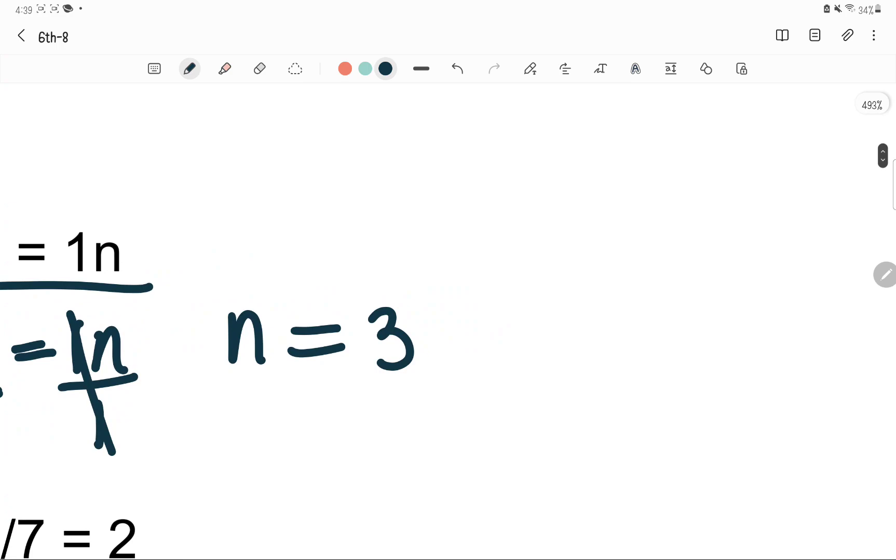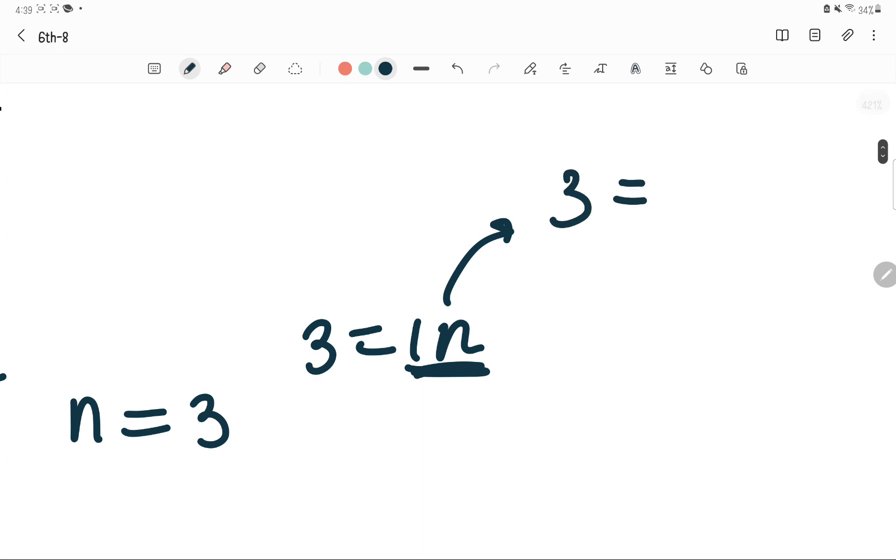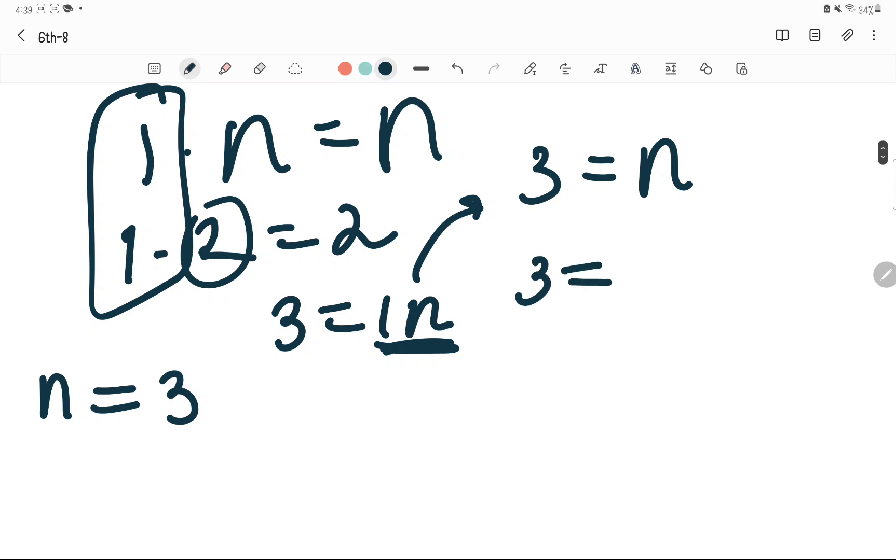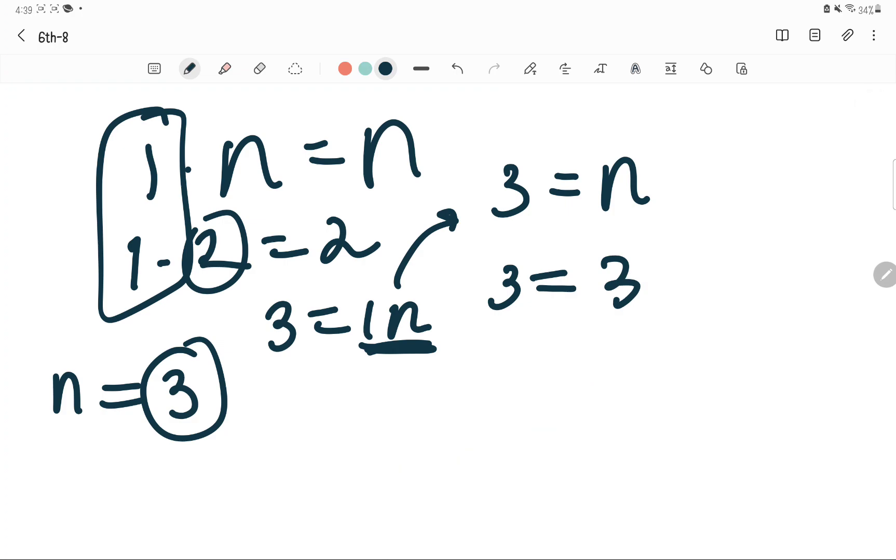We can check by 3 equals 1n. For this one, it can also be written as just 3 equals n, because 1 times n is just n. 1 times 2 is just 2. There's no meaning putting 1 times in front of any variables or numbers, because no matter what you divide or multiply by 1, it's just that number. 3 is 3. I just substitute this in here.